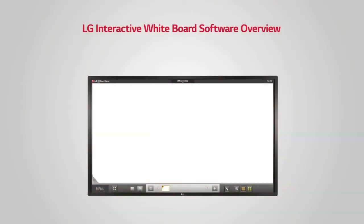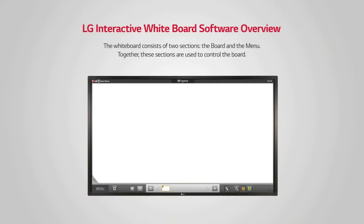LG's interactive whiteboard IWB landing page. As you can see, the whiteboard consists of two sections: the board and the menu. Together, these sections are used to control the board. The board refers to the main area of the screen, and the menu refers to the area of the screen below the board.